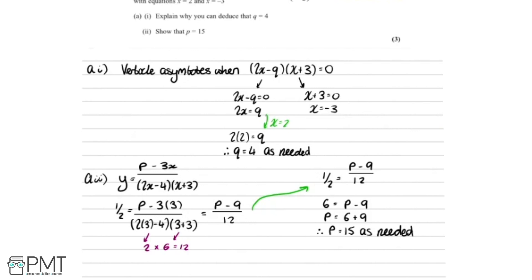Looking through to see where we get the marks: we get one mark for explaining that 2x minus q equals 0 when x equals 2, which then means q equals 4. We get another mark for recognising we need to substitute the point x equals 3, y equals a half to have p as the single unknown. And we get the final mark for using algebraic manipulation to show that p equals 15.